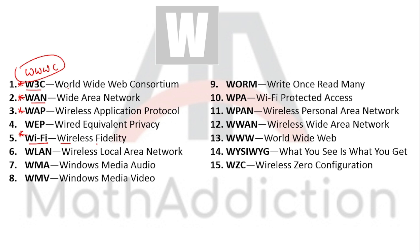WLAN: Wireless Local Area Network. WMA: Windows Media Audio. WMV: Windows Media Video. WORM: Write Once Read Many. WPA: Wi-Fi Protected Access. WPAN: Wireless Personal Area Network. WWAN: Wireless Wide Area Network. WWW: World Wide Web. WYSIWYG: What You See Is What You Get — whatever you see is what you get.